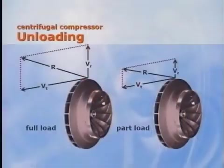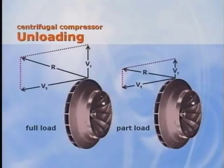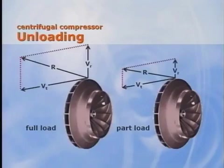When using a centrifugal chiller in a high-lift application, it is extremely important to understand compressor dynamics at part load. Larger pressure differentials challenge the ability of a compressor to unload due to a condition called surge. Consider a constant-speed compressor impeller and the velocity vectors discussed earlier. As the load on the chiller decreases, the inlet vanes restrict the refrigerant flow into the compressor. This decrease in refrigerant flow reduces the radial vector V sub R, and in this case the tangential vector V sub T decreases as well.